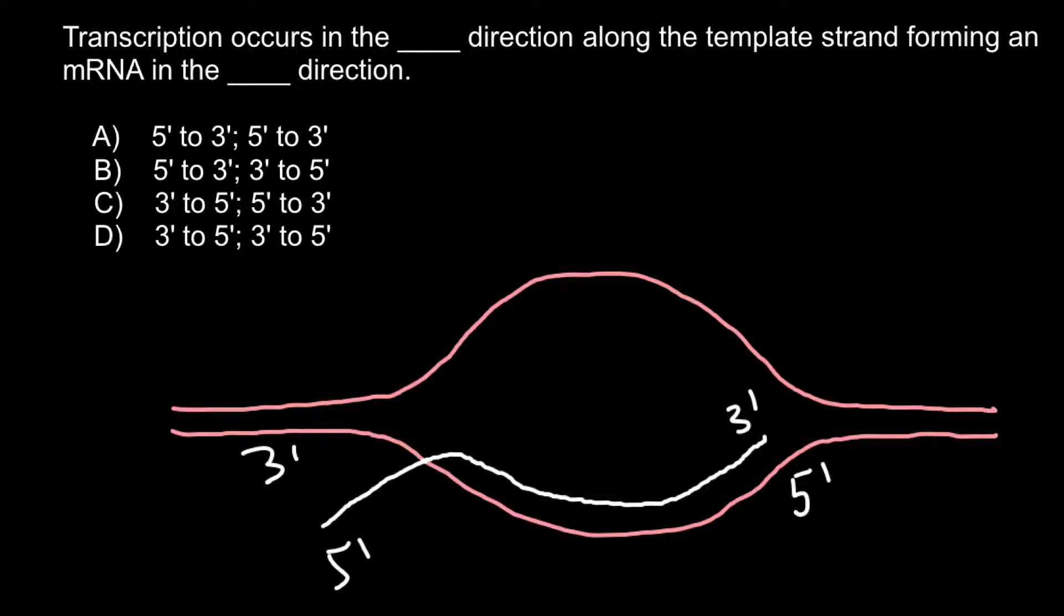in reverse directions, we would have 5 prime here on the coding strand of the DNA and 3 prime here on the other side of the coding strand of the DNA. So now we can answer the